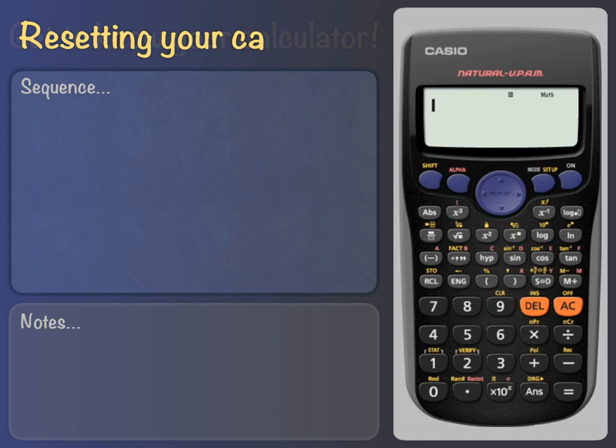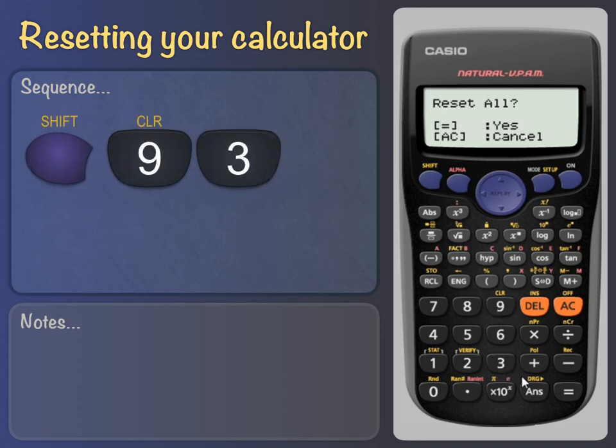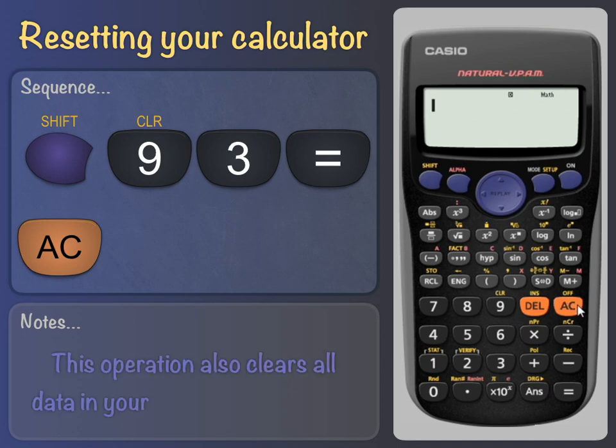First off, resetting your calculator. This will get it back to its initial default settings, just as if it was fresh out of the box. So switch on the calculator, then press Shift 9 3 equals, and then AC to clear the screen. This operation also clears all the data in your calculator's memory.